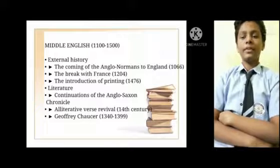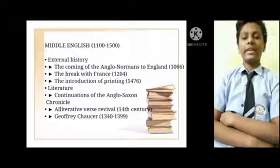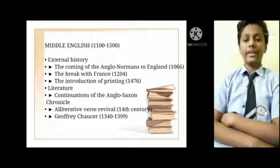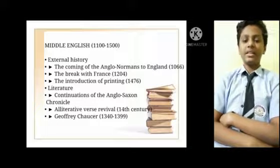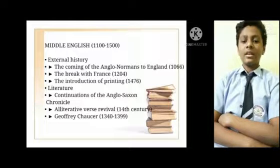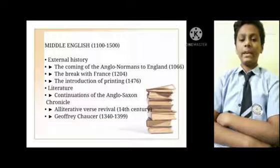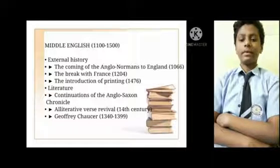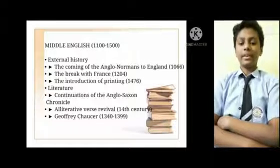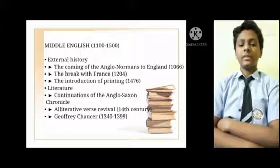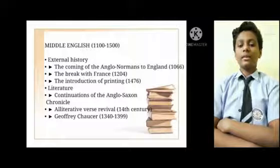Middle English: from 1100 AD to 1500 AD. External History: The coming of Anglo-Normans to England, 1066 AD. The Break with France, 1204 AD. Third, the introduction of printing, 1476.